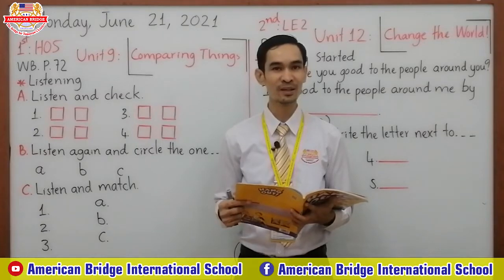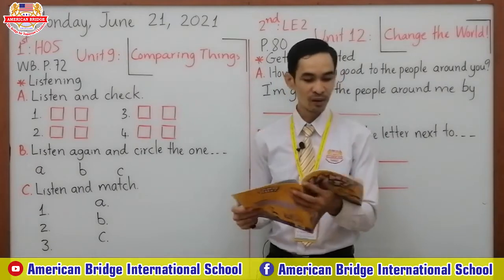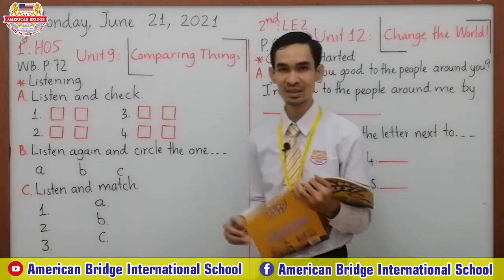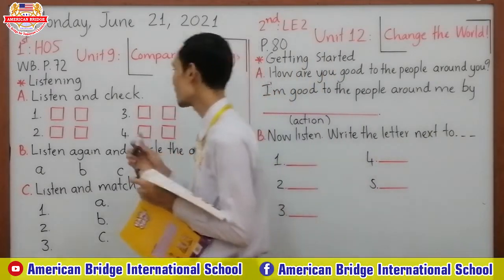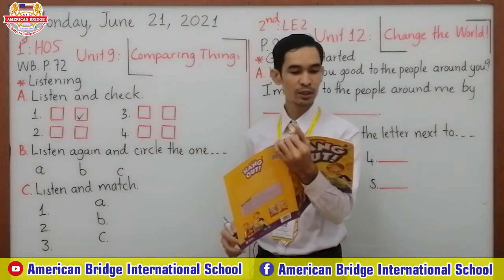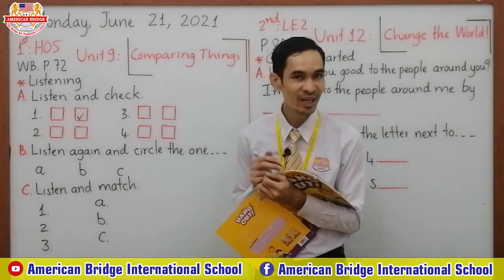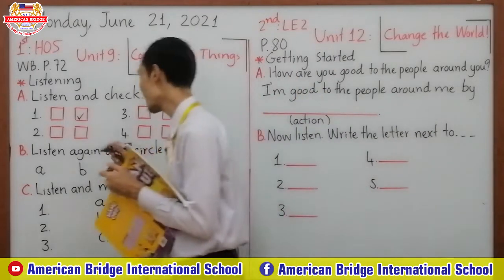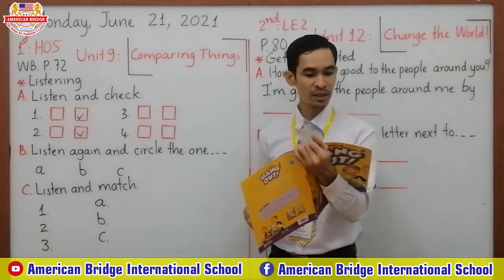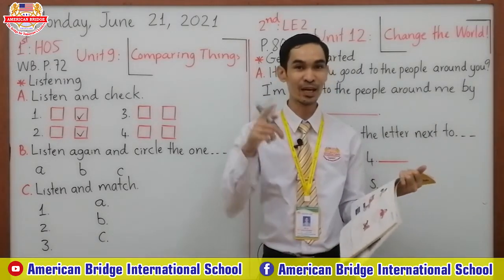Finish, everyone. Good job. So now I would like you to check the answer with me. Number 1: The family needs a keyboard and a screen — yes or no, everyone? It must be no. How about number 2: Mom wants a bright color mouse — yes or no? It must be no. So now let's continue to number 3: Dad wants a cheap mouse — yes or no? It must be yes.